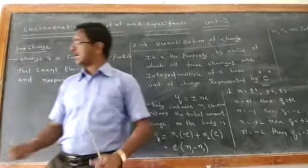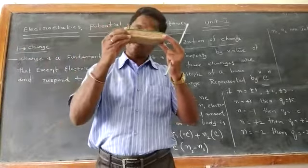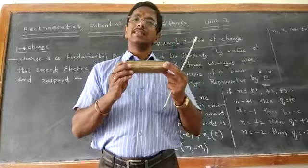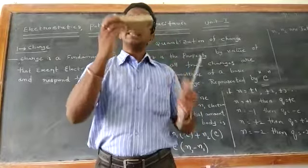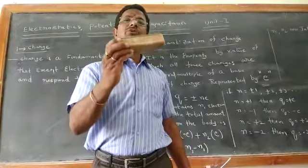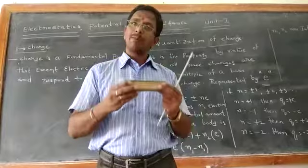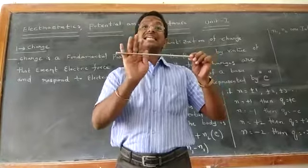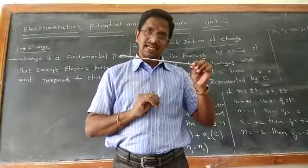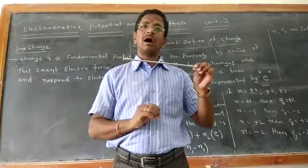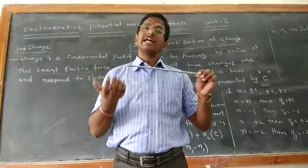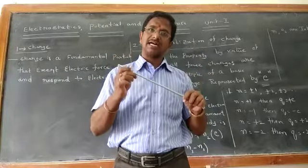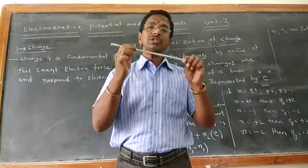For example, take a charged body. If it has five electrons and six protons, that means one proton is more, so this body belongs to a positive charged body. Another example: suppose this body has five protons and ten electrons. The number of electrons are five more than the protons, so that body has a net negative charge and belongs to a negative charged body.